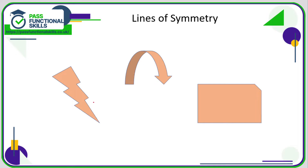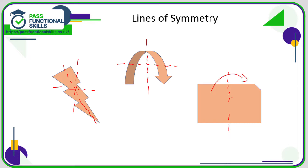For completely irregular shapes, there are sometimes no lines of symmetry. This thunderbolt — there's no way I can fold it in any direction so that one half sits perfectly on the other. Same with this arrow — folding it in any direction won't match up. And this shape here is fairly close, but if I fold it onto this side there's a bit missing, so it's not a perfect match. All of these shapes have zero lines of symmetry.